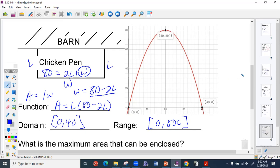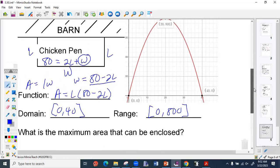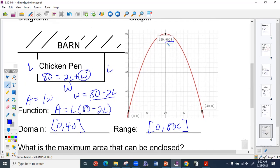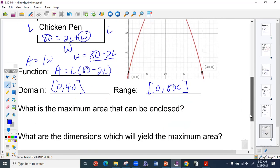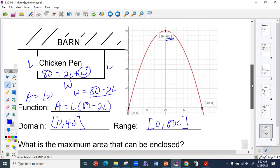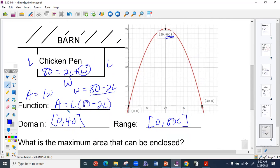It says, what is the maximum area that can be enclosed? What's our maximum area? 800, right. Our maximum area that we can enclose is 800 square meters. The reason being is that our x-axis represents our length, and our y-axis is area. Therefore, this is our length, and at this length we get this area.